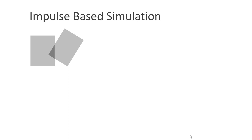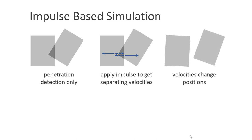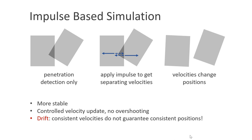Many rigid body engines use an impulse-based simulation. Here, the penetrations are only detected, then an impulse is applied to make the velocities separating. When the new velocities are applied, the bodies separate. This approach is more stable — the velocity update is controlled and does not yield any overshooting problems. The disadvantage of this approach is drift, because we only work with velocities. Consistent velocities do not guarantee consistent positions, and additional tricks are needed to fix this problem.